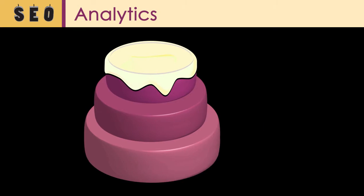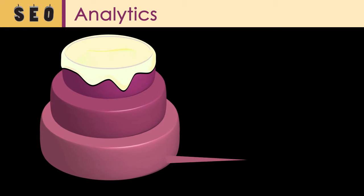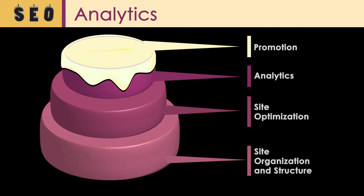If you think of SEO as a three-layer cake, the layers would be site organization and structure, then site optimization, then analytics. Finally, the finishing touch, or the frosting, would be promotion that includes, among other things, social media, blogging, and paid ads.